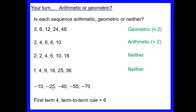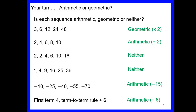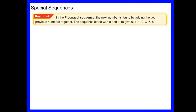The sequence −10, −25, −40, −55: from −10 to −25 is subtract 15, to −40 subtract 15, to −55 subtract 15 — subtracting 15 every time, so that's arithmetic. Finally, if the first term is 4 and the rule is add 6, we're adding 6 to every number — going up by adding the same amount each time is arithmetic.